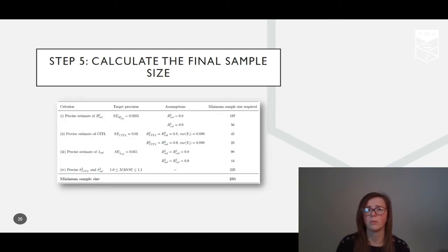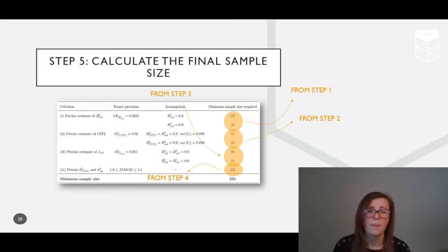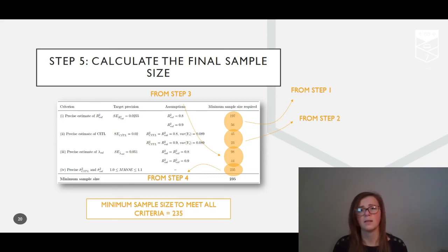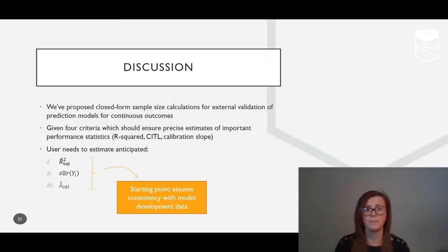Assuming we aim to validate this model from Huda et al. in a population similar to the development data, steps one to four have provided four sample sizes to ensure each of the criteria are met. Based on the largest of these sample sizes, the final minimum sample size required to meet all criteria is 235 participants. This is driven by criterion four to target sufficient precision around the variance of the calibration statistics.